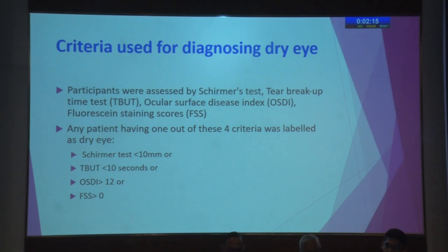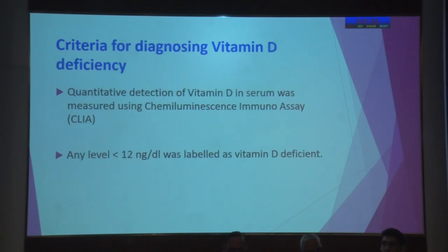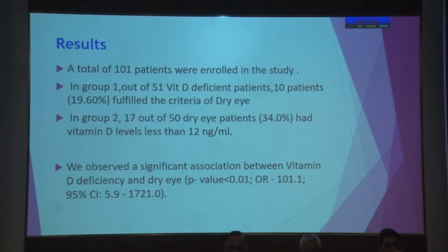The Schirmer test measurement had to be less than 10 mm; tear breakup time less than 10 seconds; OSDI, which is a questionnaire-based score, had to be more than 12; and the fluorescein staining score, where the ocular surface is divided into five zones, had to be not more than 15. Vitamin D deficiency was diagnosed using chemiluminescence immunoassay, and levels less than 12 nanograms per dL were labeled as vitamin D deficient.